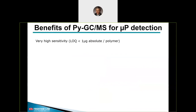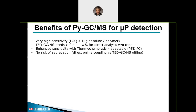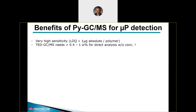This is of course our opinion. We have a very high proven sensitivity; the limit of quantification is found to be smaller than one microgram absolute per polymer. The TET GCMS people are claiming to analyze microplastic environmental samples without any pre-treatment or other sample preparation. However, to do this the sample must contain more than about 0.4 weight percent plastic, which is very unlikely in a typical environmental sample. Therefore, sample preparation becomes mandatory again.